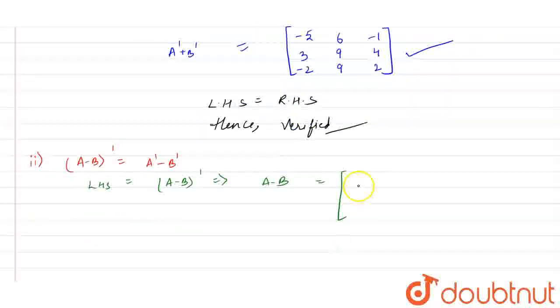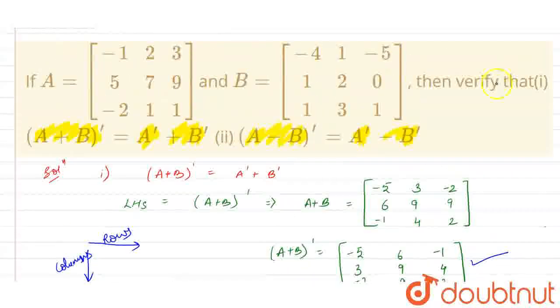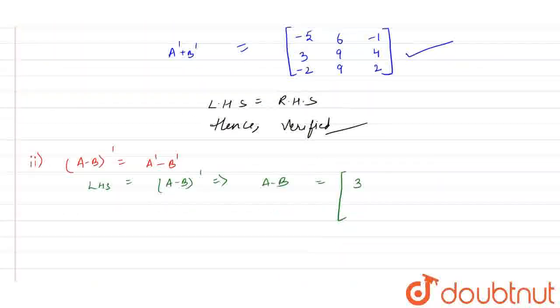Similarly the way we have added the two matrices, similarly we will subtract the two matrices. So this element will get subtracted, this element will get subtracted from this, this will from this and this from this. Similarly the other elements will get subtracted from these elements. So here, minus 1 minus of minus 4, that is minus 1 plus 4, that is we will get 3.